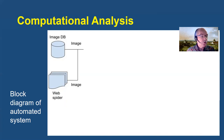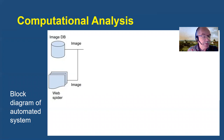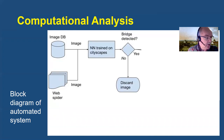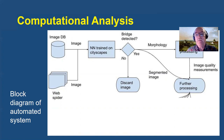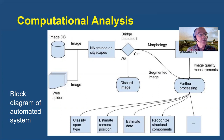This is Bill's block diagram showing the computational analysis, which is similar to the one he used previously to analyze images describing the history of electronics. First, an image is obtained either from a database or using a web spider. The image is scanned using a neural network trained to detect bridges. If no bridge is detected, the image is discarded. If a bridge image is detected, it may be processed and quality measurements obtained. Then further processing is carried out to classify the span type, to estimate the camera location, to estimate the date of construction, to recognize structural components, and so on.